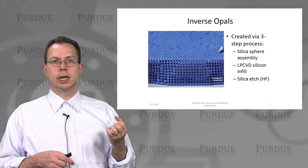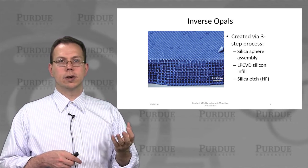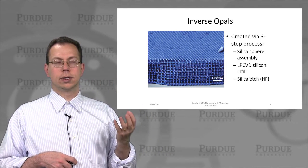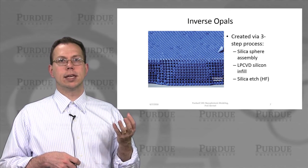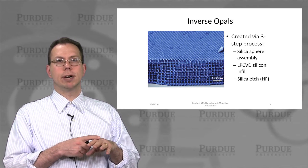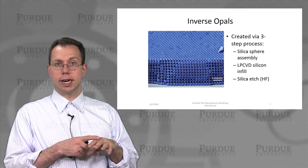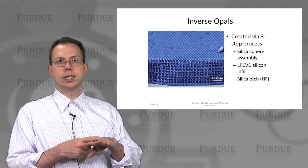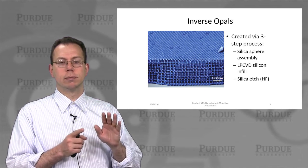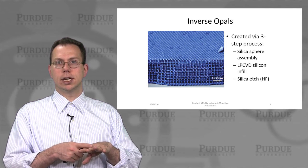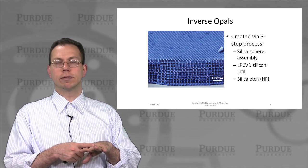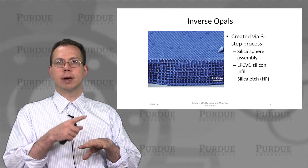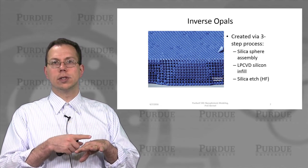A third type of 3D photonic crystal of great interest is called the inverse opal structure. As the name suggests, it's based on a naturally occurring structure which you would see in an opal. Opals are gemstones that naturally have an iridescent coloration or sheen, which comes from the presence of many small silica spheres spaced periodically in the structure. In the inverse opal structure, you first assemble the silica spheres like in a typical opal — but artificially instead of naturally. Then you fill in the gaps between those spheres using low-pressure, atmospheric-pressure chemical vapor deposition of silicon, creating a very high index material. You can increase the index contrast further by etching out the original silica spheres using hydrofluoric acid.